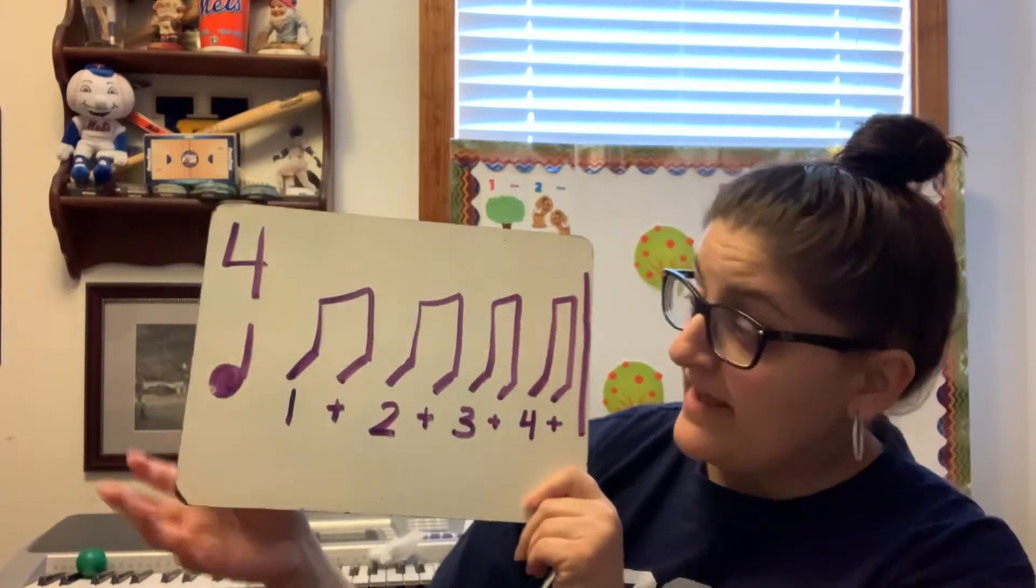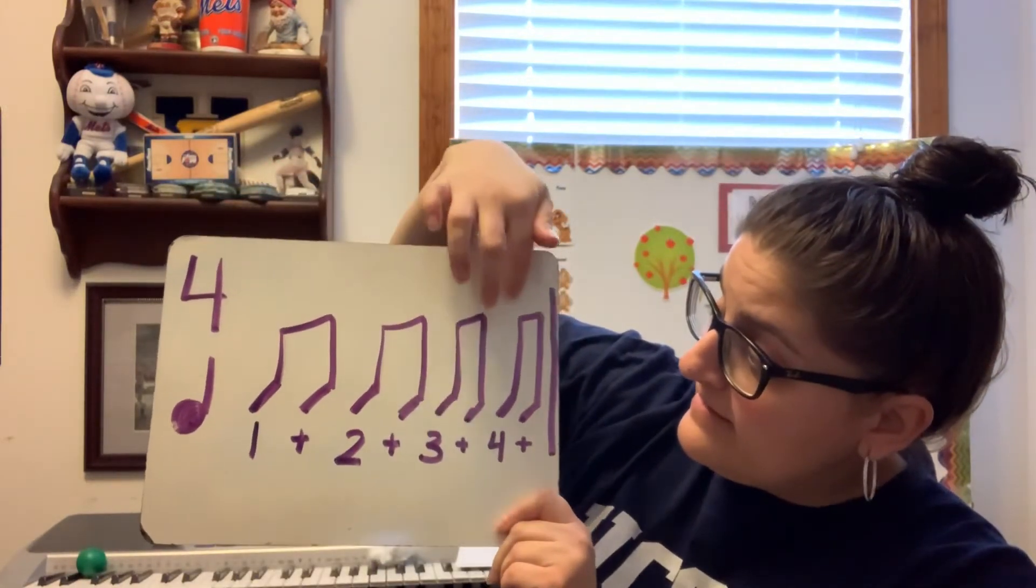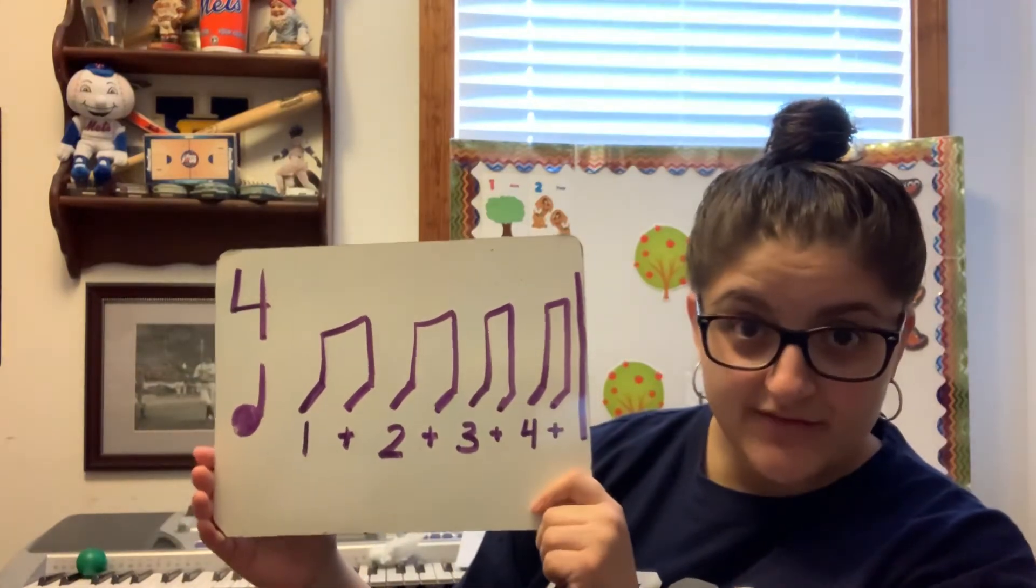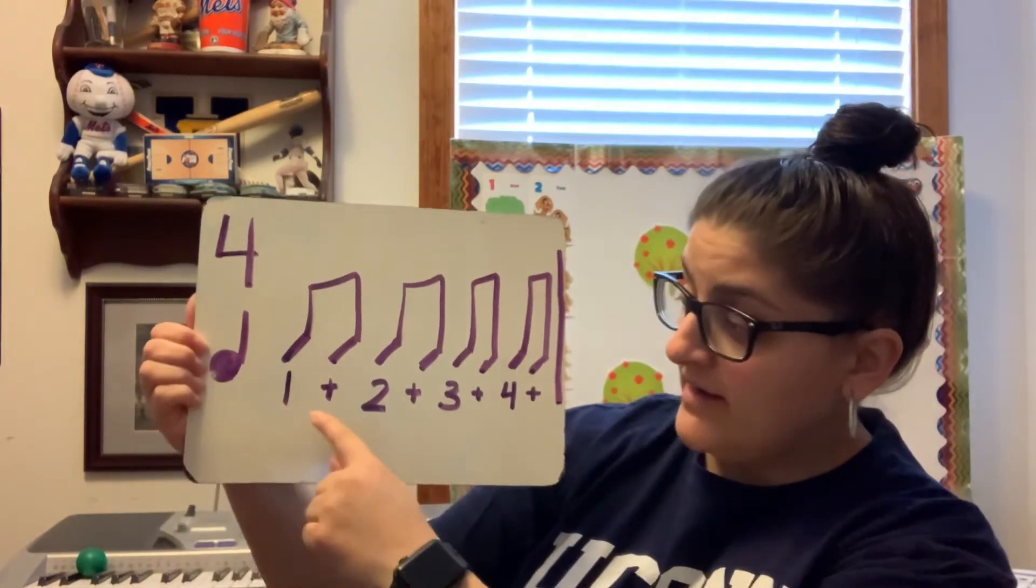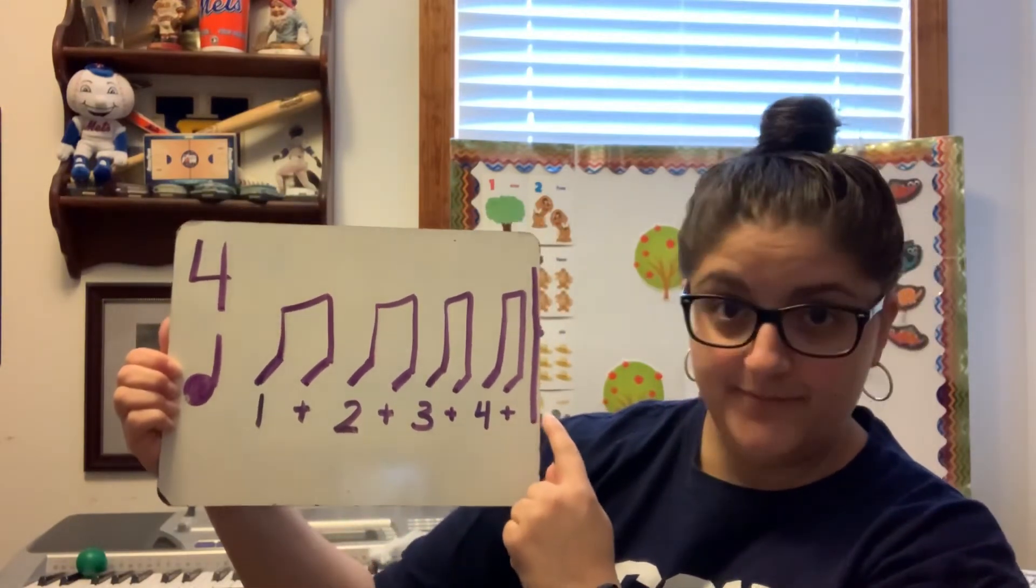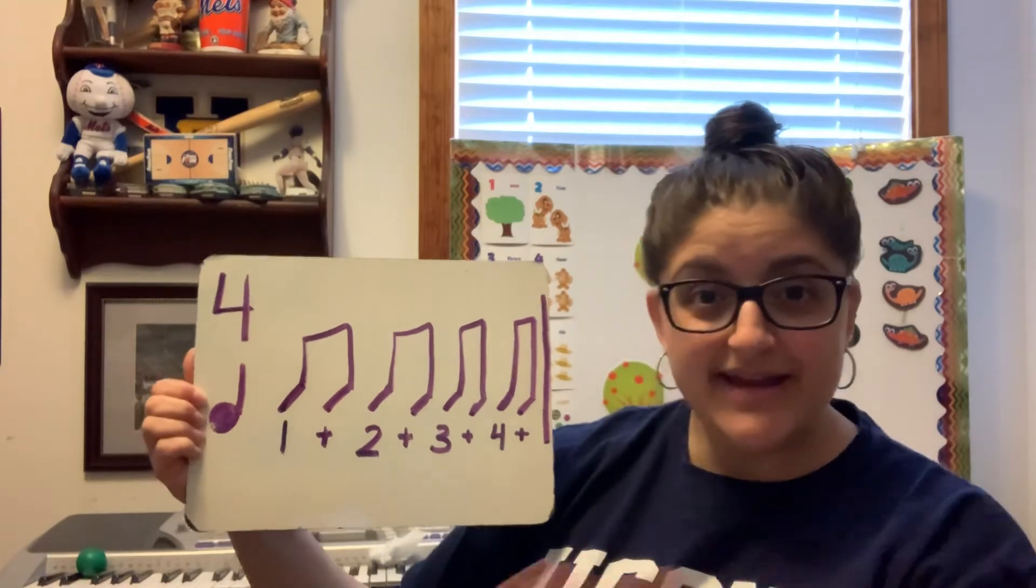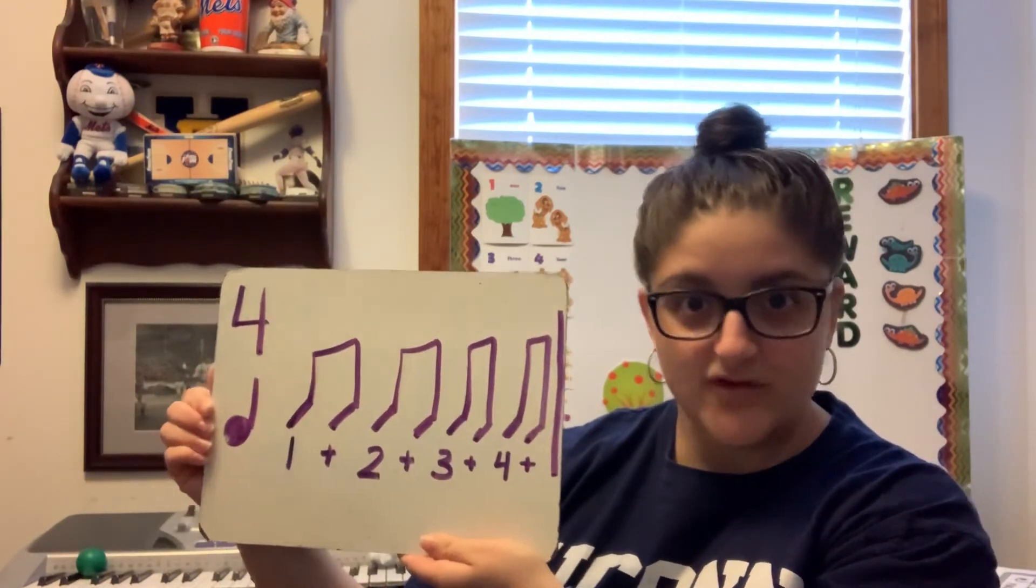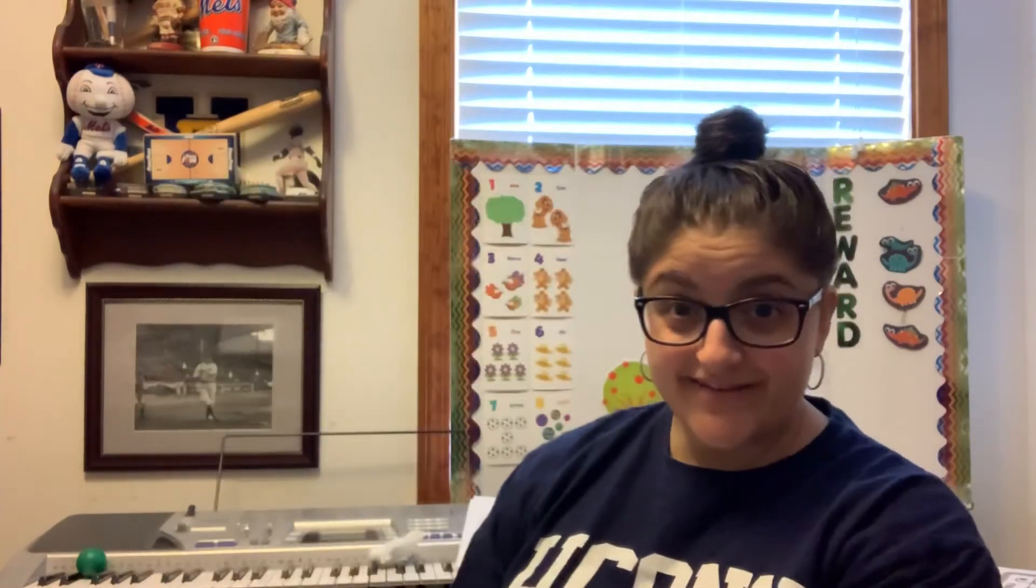We can say ti-ti like I did before, or we assign them numbers and symbols like this. So I can say ti-ti, ti-ti, ti-ti, ti-ti. Or if I'm a little bit older, a little bit more experienced, I might be able to say one-and, two-and, three-and, four-and. Two different ways to count it, but it ends up being the same sound. No matter which way I do it with ti-tis or with numbers, it sounds like this: one-and, two-and, three-and, four-and. Or ti-ti, ti-ti, ti-ti, ti-ti. The clapping, the rhythm is still the same.